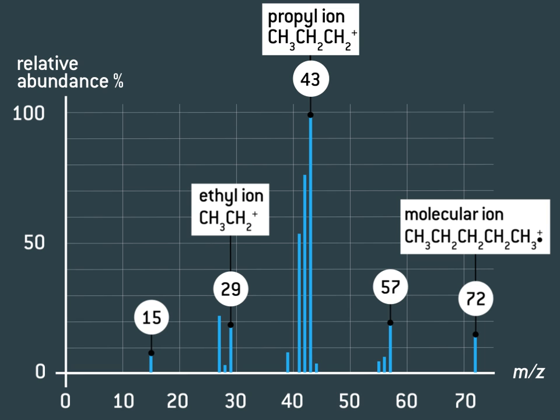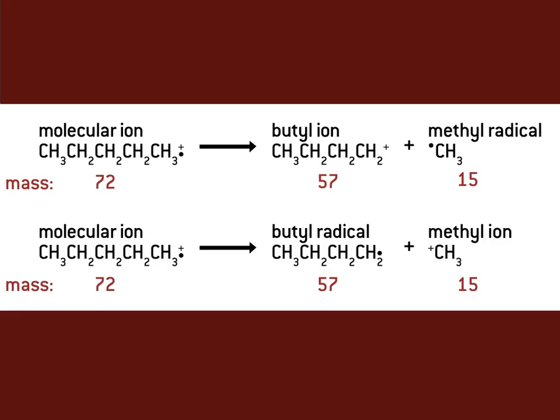We've already seen how the propane molecule could split to produce these fragment peaks. The peak at mass 57 is caused by the butyl fragment, and that at mass 15 is caused by the methyl fragment.